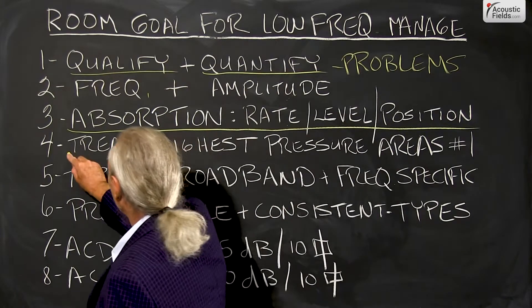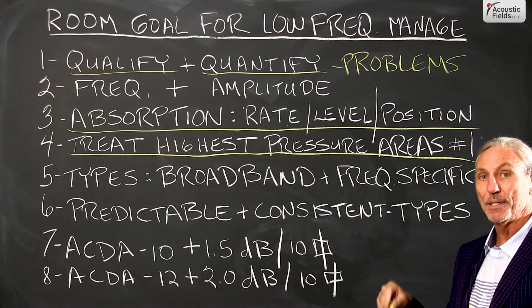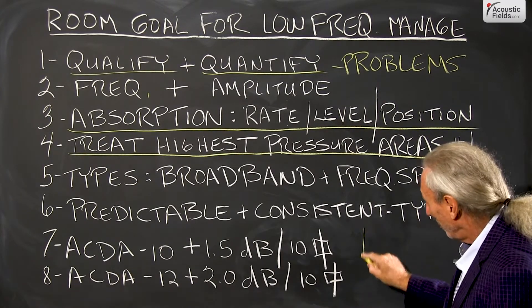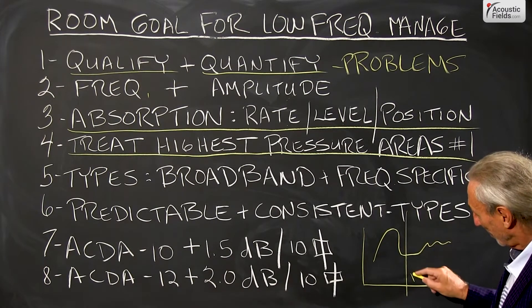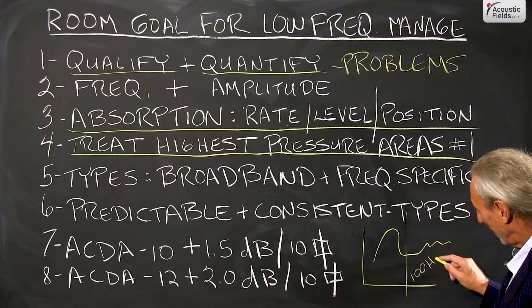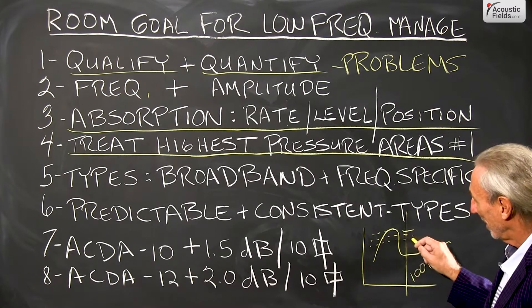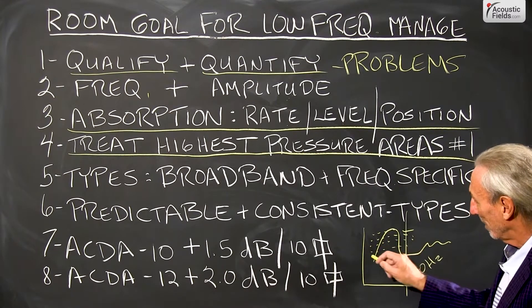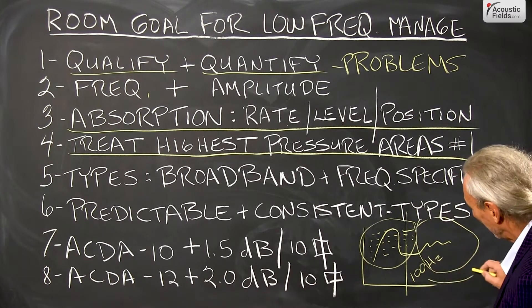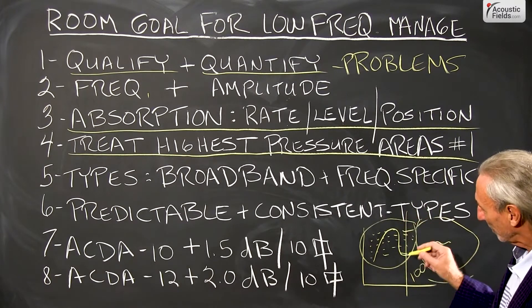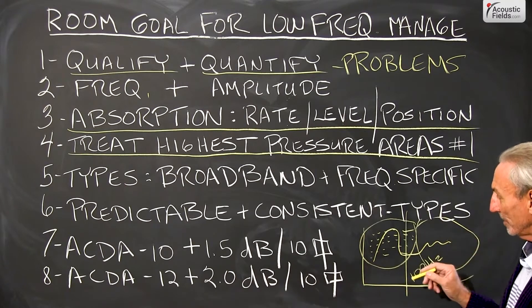So the room's goal — if we were the room — would be to tell people to treat the highest pressure area inside the room first. We all know that traditional big bump below 100 cycles. The room would say let's start treating that first because it has such a large impact, and any changes we make there will have an impact on the rest of the response.